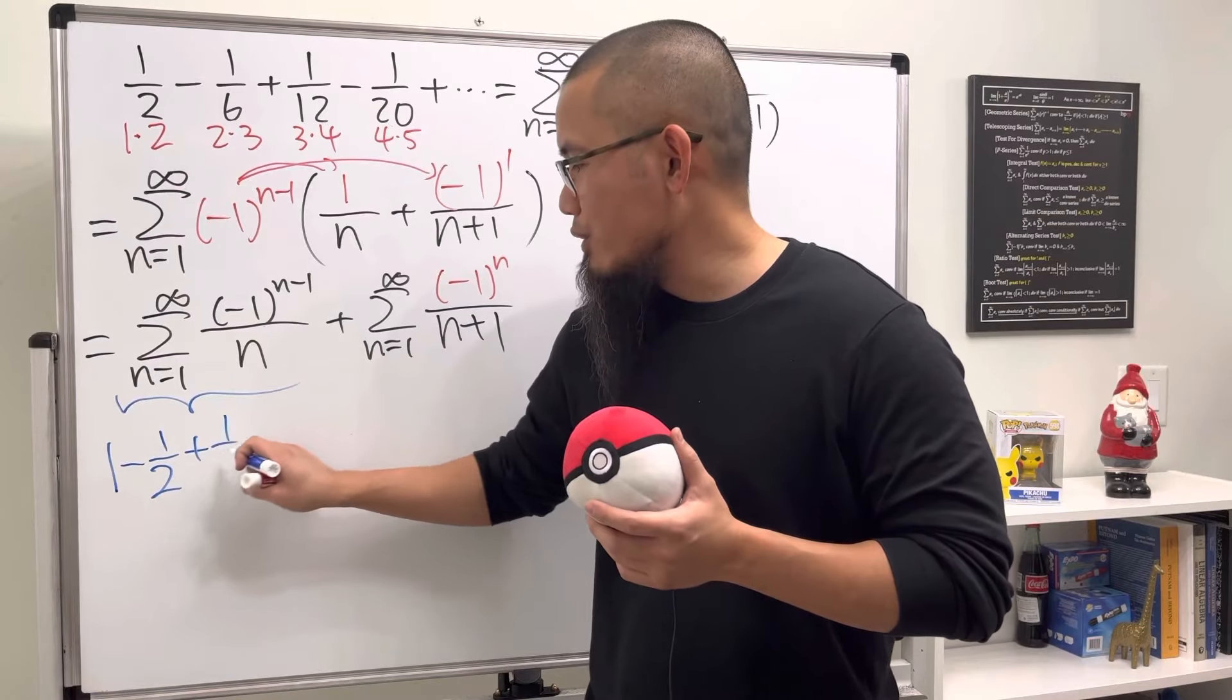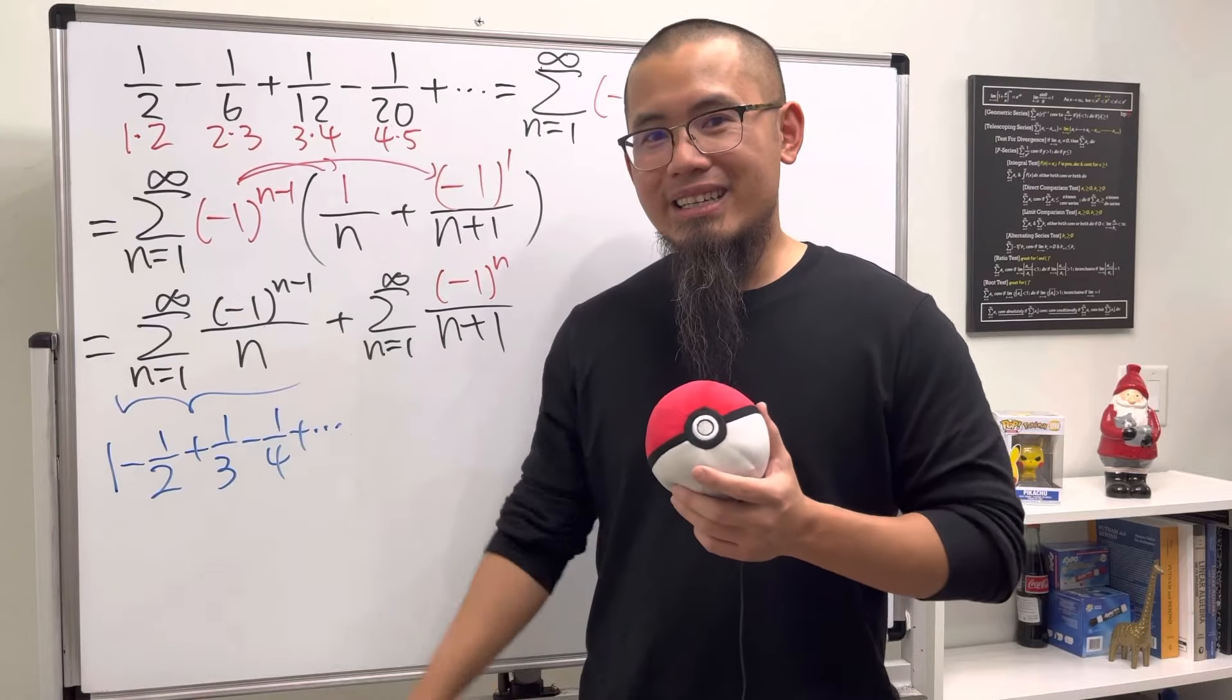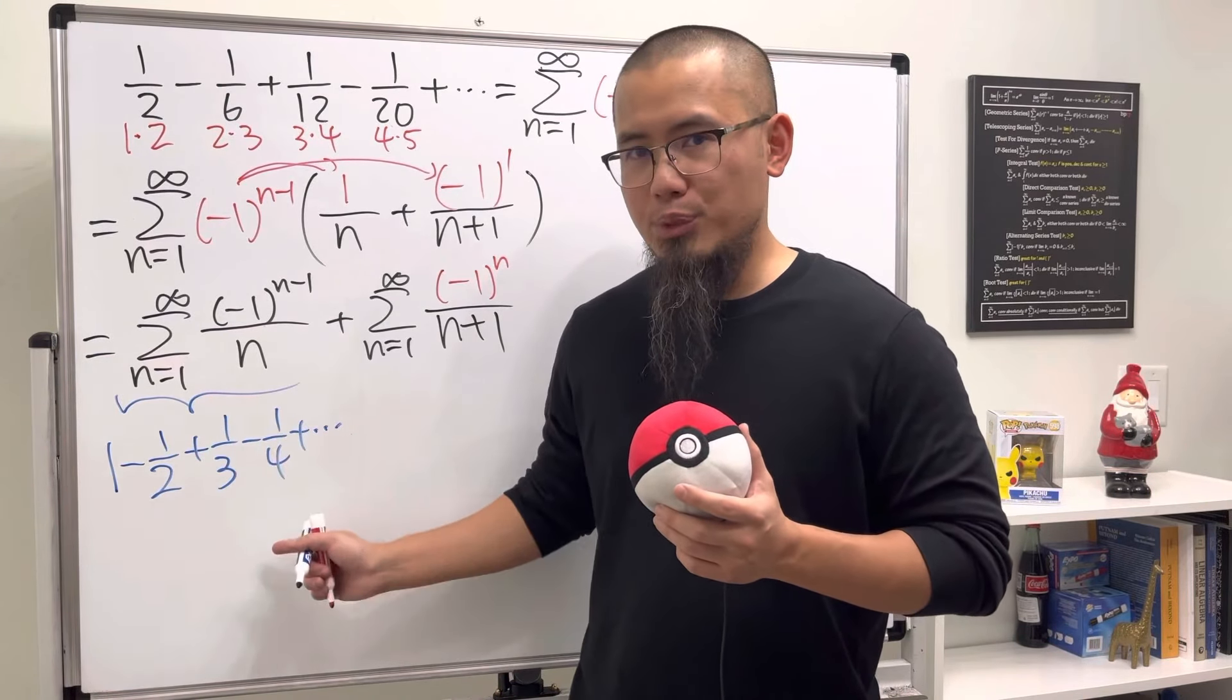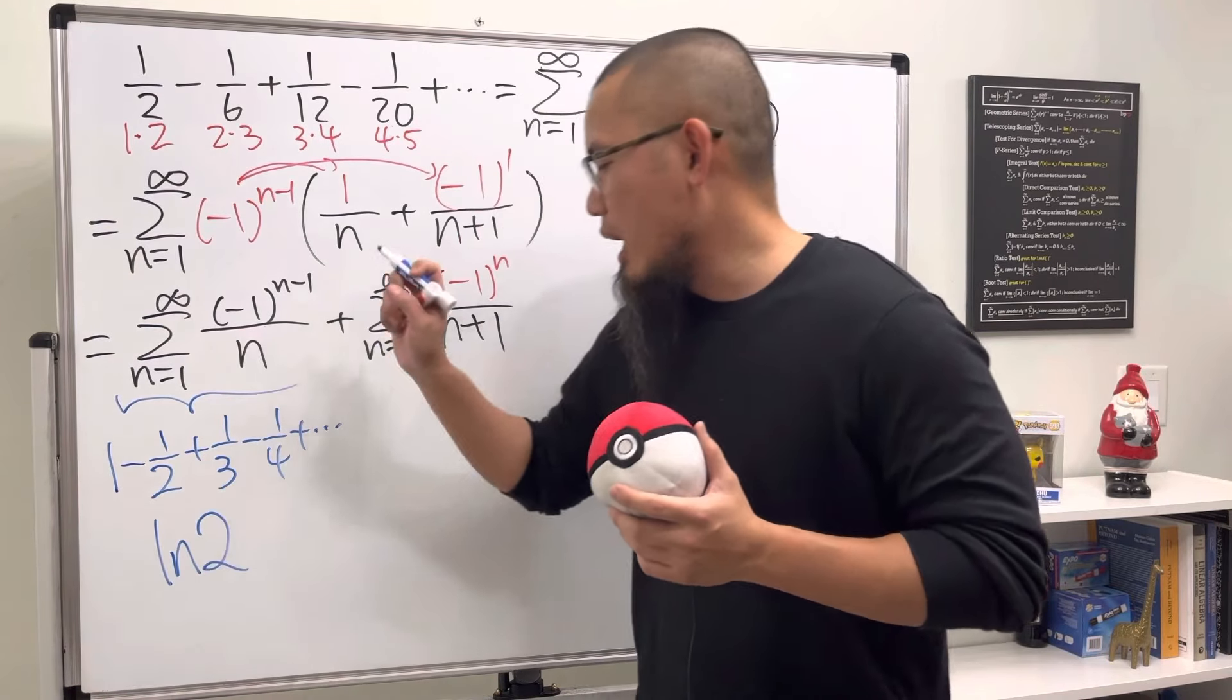Yes, this is the famous alternating harmonic series, and we know that this right here converges nicely to ln(2). We can use the power series for ln(1+x) to figure that out.